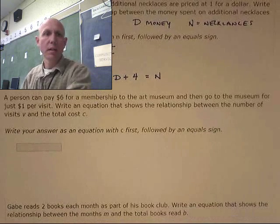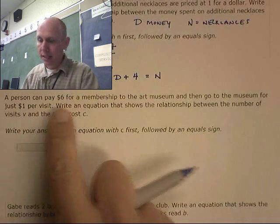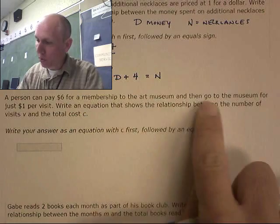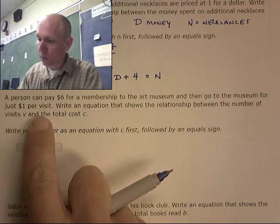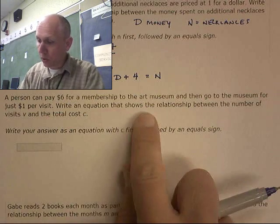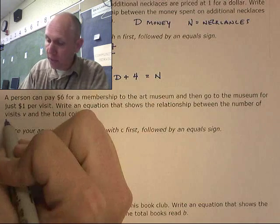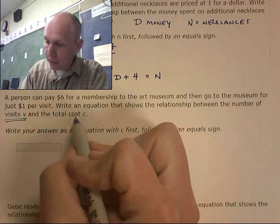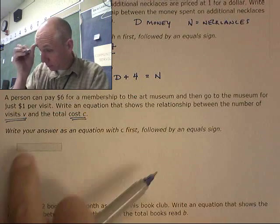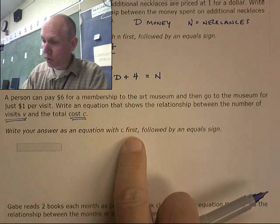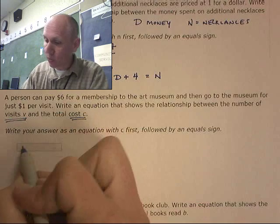Here's our next one. A person can pay six dollars for a membership to the art museum and then go to the museum for just one dollar per visit. Write an equation that shows the relationship between the number of visits V and the total cost C. Write your equation with C first. This is going to be a C equals.